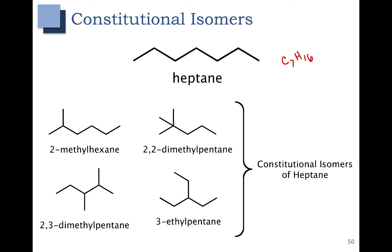A good way to check for different connectivity is to name the molecules. If the molecule has a different name but the same molecular formula, it's a constitutional isomer. If I just redraw heptane, it looks a little bit different, but this is still just heptane. If I were to go through and name this molecule, I would quickly realize that it's the same thing — it's heptane. It's not a constitutional isomer.